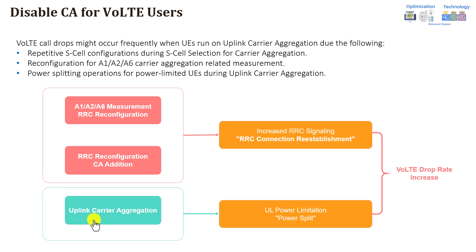The third issue is if uplink carrier aggregation is enabled, not only downlink. In the case of uplink carrier aggregation, this will cause a power limitation because the UE needs to transmit different power for each carrier. If you have a 23 dBm maximum power, the power needs to be split between the two carriers, so the power will be reduced by 3 dB to around 20 dBm. And if you have three carriers, it goes even to 17 dBm.